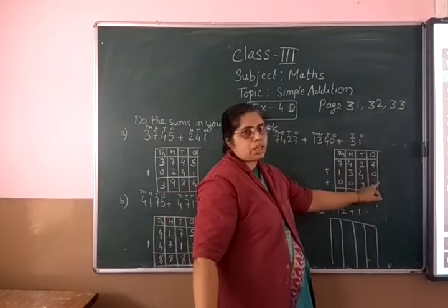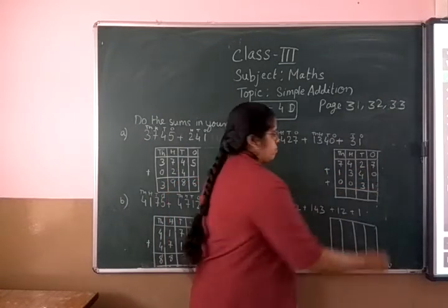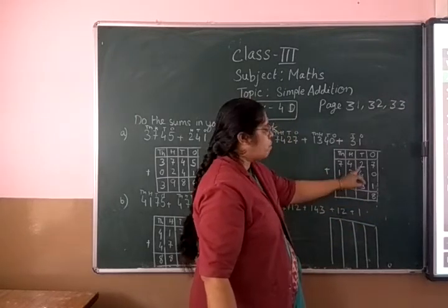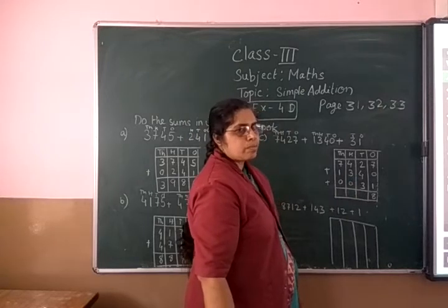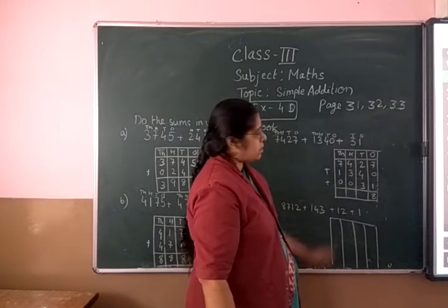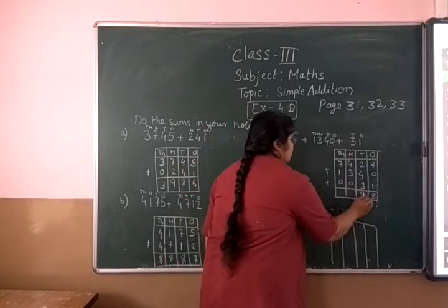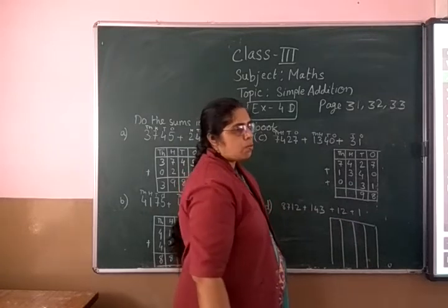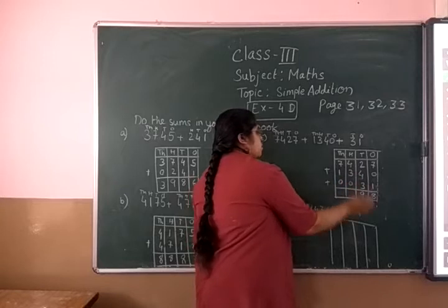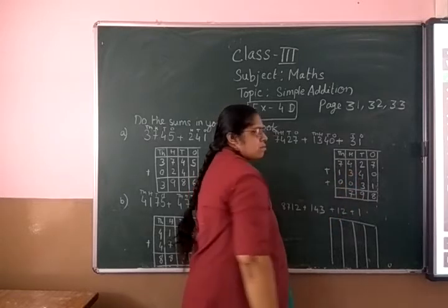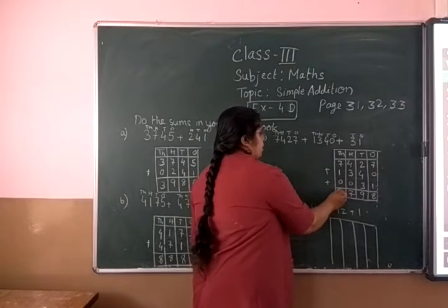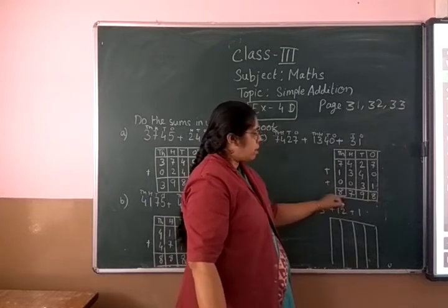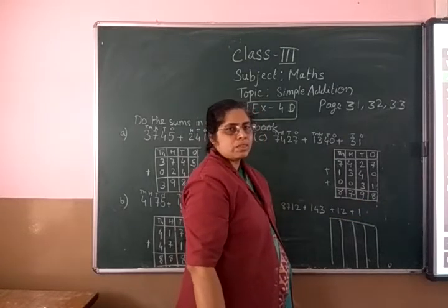Now add. 7 plus 0 is 7. 7 plus 1 is 8. 2 plus 4: after 2 count — 3, 4, 5, 6. 6 plus 3: 7, 8, 9. 4 plus 3: take 3 fingers and start counting after 4 — 5, 6, 7. 7 plus 0 is 7. 7 plus 1 is 8. 8 plus 0 is 8. And the answer is 8,798.